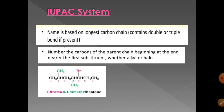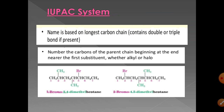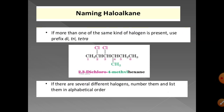In another example, start numbering from the end that gives bromine the lowest possible number — position two — making it 2-bromo-4,5-dimethylheptane. If more than one of the same kind of halogen is present, use the prefixes di, tri, or tetra. For example, two chlorine atoms at positions two and three, with a methyl at position four, gives the name 2,3-dichloro-4-methylhexane — six carbons, so the parent name is hexane.